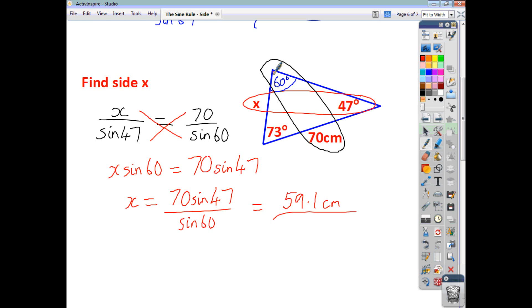So, that's how you use the sine rule to work out a missing side. Just take care to make sure that you substitute in correctly and make sure that you don't make any silly mistakes as you work through the question. I hope that was helpful.